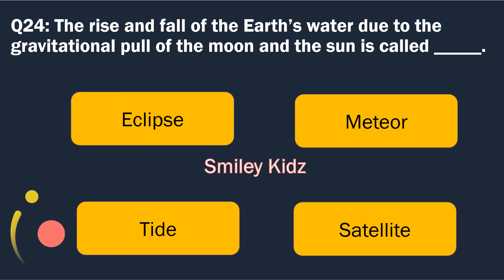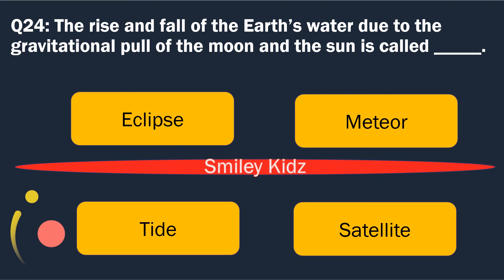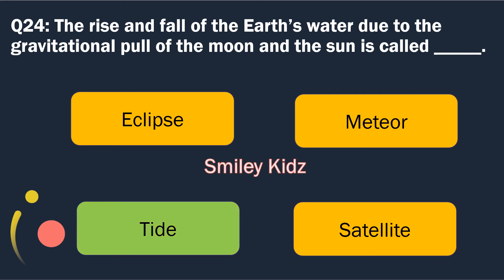Question number 24. The rise and fall of the earth's water due to the gravitational pull of the moon and the sun is called. Options are: Eclipse, Meteor, Tide and Satellite. The right answer is Tide. The rise and fall of the earth's water due to the gravitational pull of the moon and sun is called Tide.